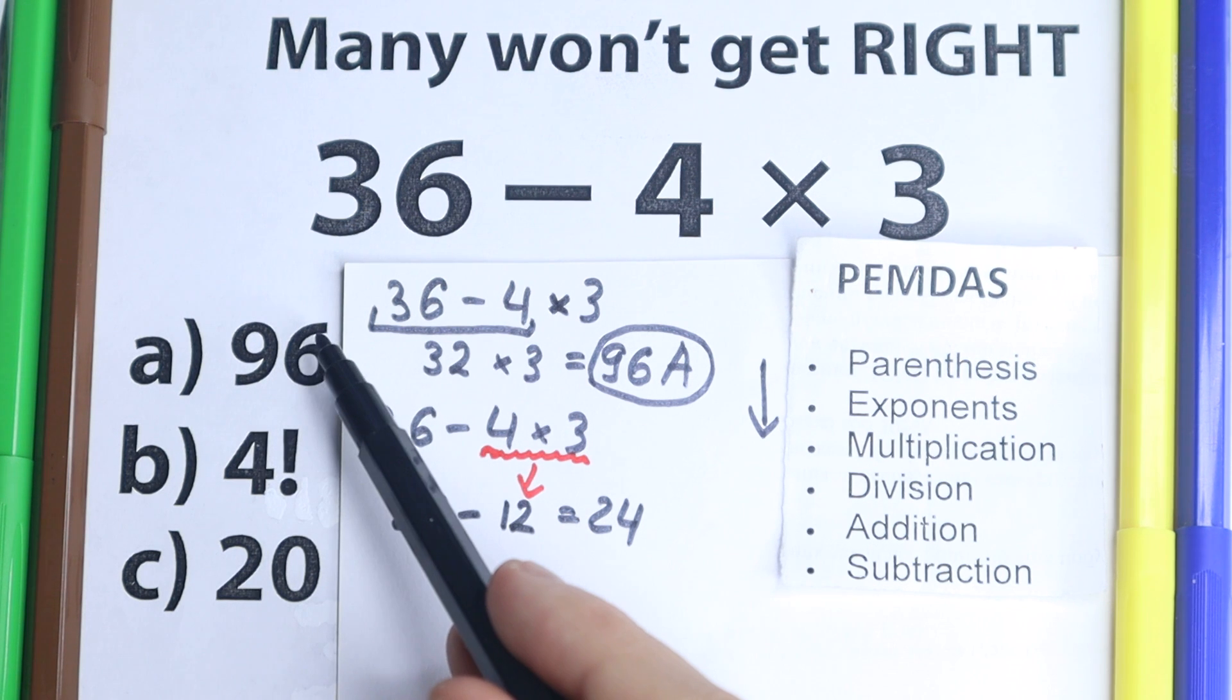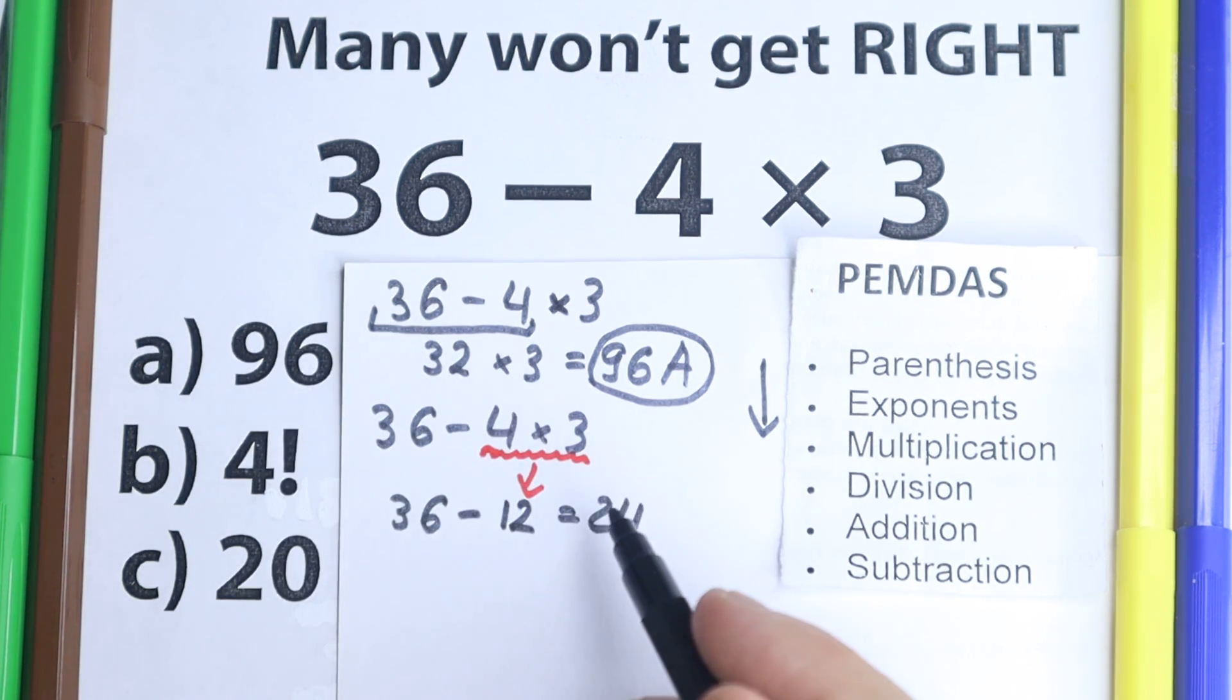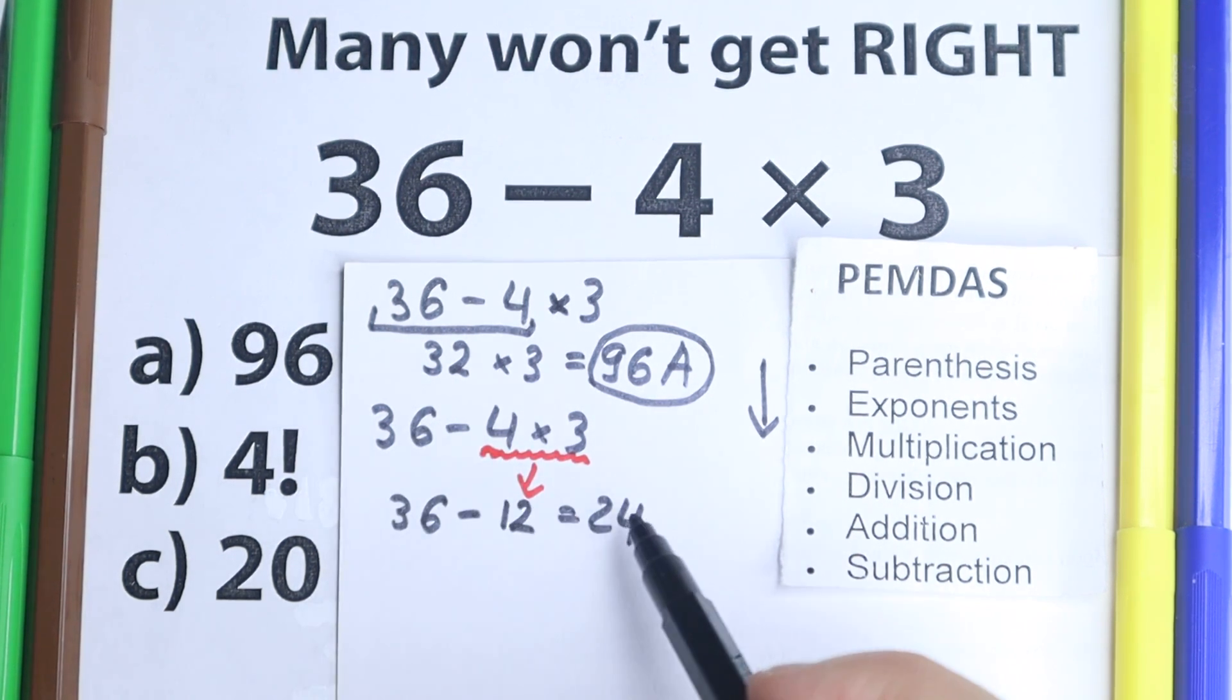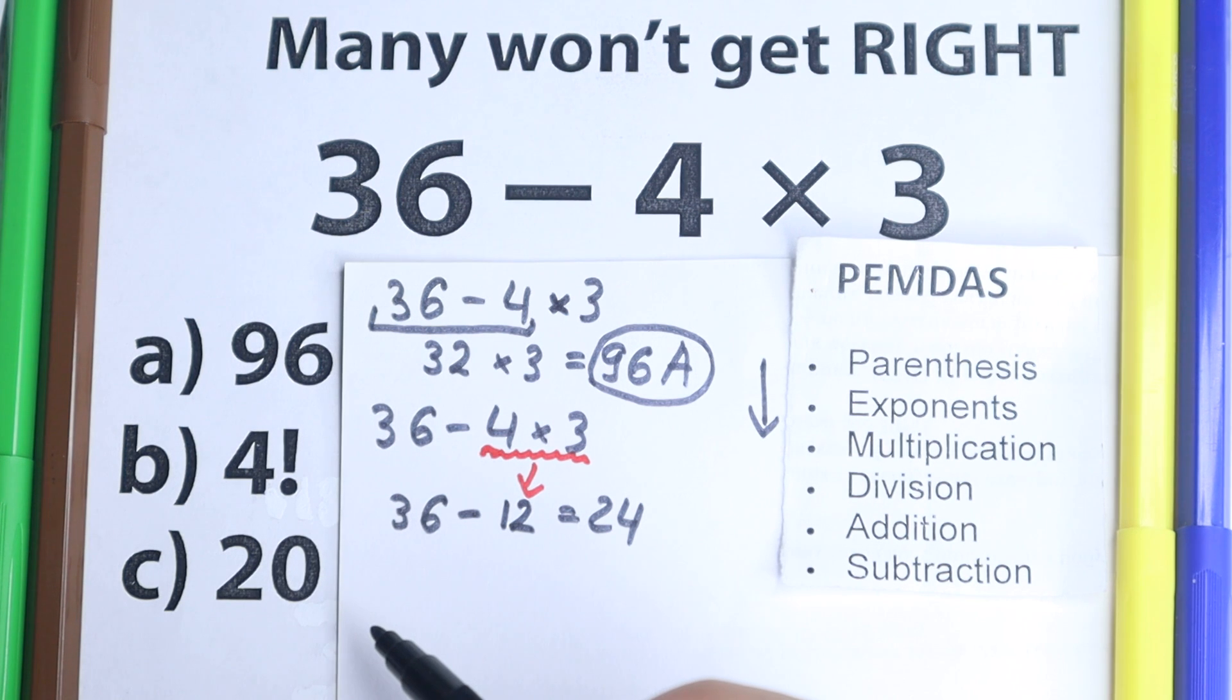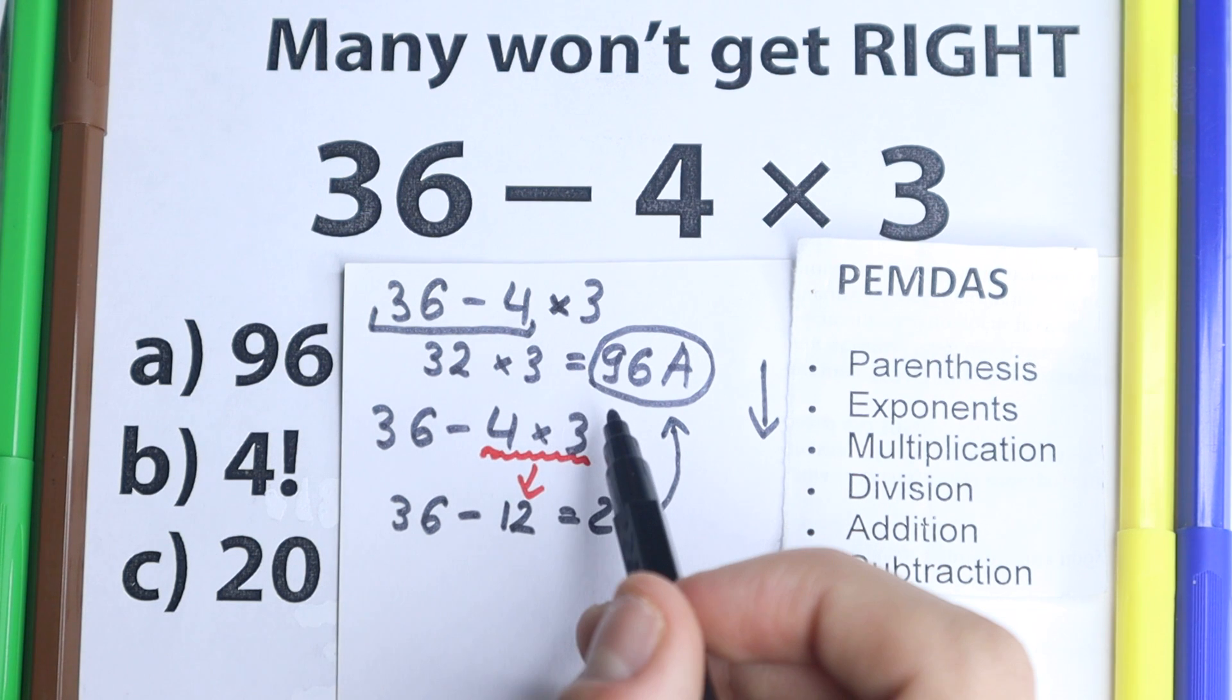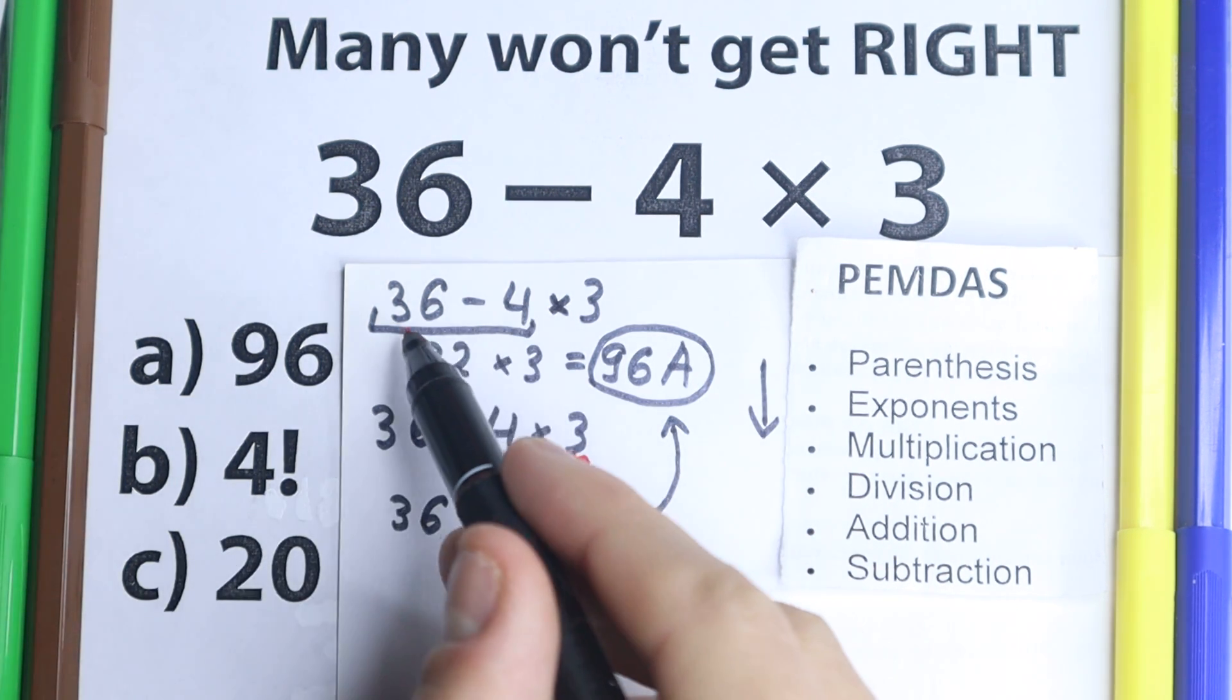And we have 36 minus 12 equal to 24. But we don't have this option right here, we have like 96, which is not the same, we have 20, this is not 24. And then maybe students solve it correctly, in a correct way, but they don't see this option right here on the first side. And then a lot of students go back to this wrong answer, which is 96, this is absolutely wrong answer.